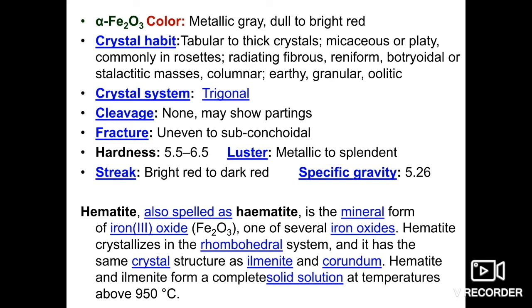Hematite is also spelled haematite. It is the mineral form of iron(III) oxide Fe2O3 and one of several iron oxides. Hematite crystallizes in the rhombohedral crystal system and has the same crystal structure as ilmenite and corundum. Importantly, hematite and ilmenite form a complete solid solution at temperatures above 950 degrees Celsius.